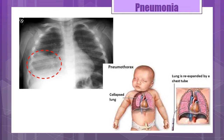Hypostatic pneumonia occurs when a patient has poor circulation to the lungs and remains in one position for too long, such as during a surgical procedure with general anesthesia. To prevent this, turn the patient frequently and use an incentive spirometer — or for children, use a pinwheel or have the child blow bubbles.